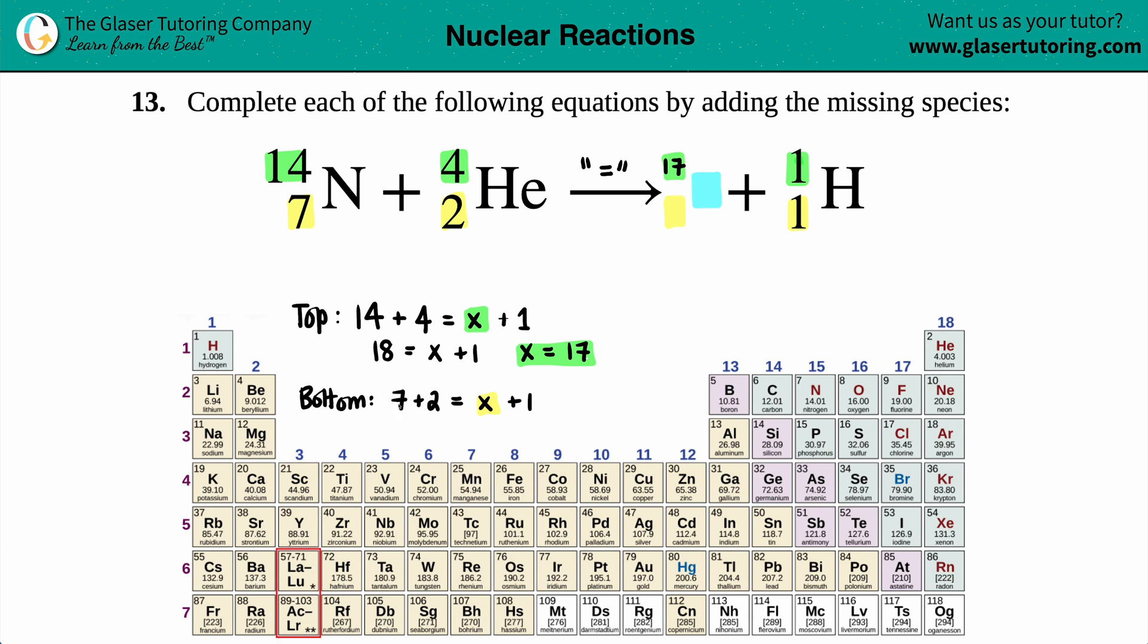7 plus 2 is a 9. So 9 equals x plus 1. And I get an 8 value here, because 8 plus 1 equals 9. So I know that the bottom number is going to be an 8.